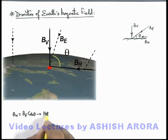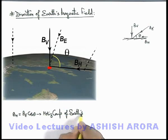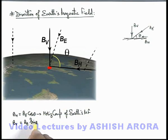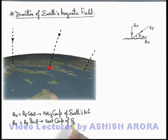B-H is the horizontal component of Earth's magnetic field. And B-V, which is B-E sin(theta), is obtained by resolving into two perpendicular components — this is the vertical component of Earth's magnetic field.